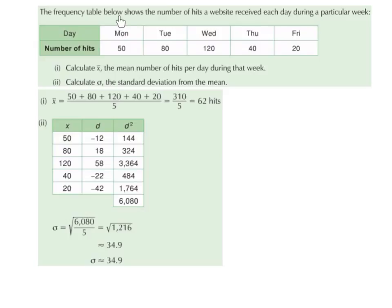The frequency table below shows the number of hits a website received during each day during a particular week. So the first row represents the day, the second row represents the frequency or the number of hits. So on Monday there was 50 hits, on Tuesday there was 80 hits, on Wednesday there was 120 hits, on Thursday there was 40 hits, on Friday there was 20 hits.